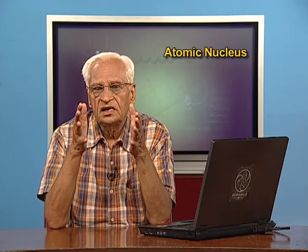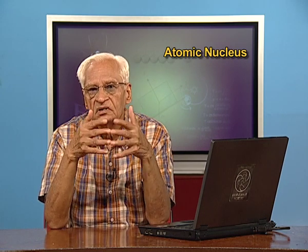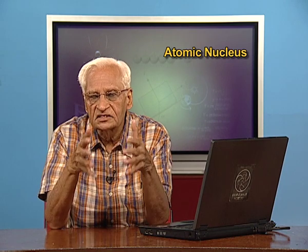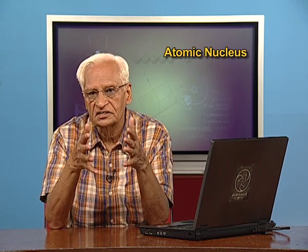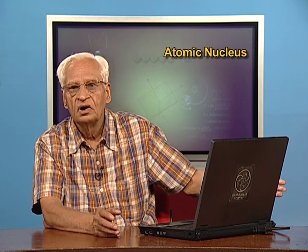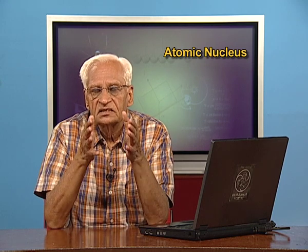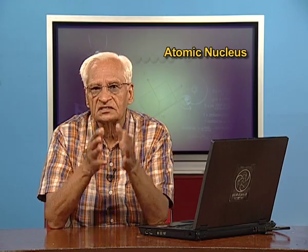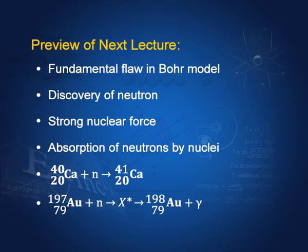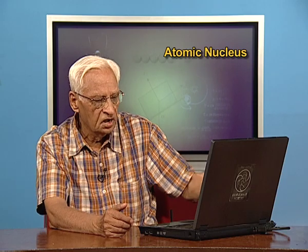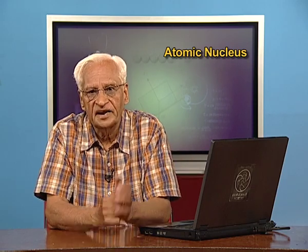So in this lecture, we studied the developments leading up to the discovery of the nucleus and we were discussing the structure of the nucleus when we interrupted this story to understand the uncertainty principle, which makes it impossible for electrons to exist inside the nucleus. In the next lecture, we shall see what the uncertainty principle does to the Bohr model, and then resume our story of the structure of the nucleus. We shall study the discovery of the neutron, strong nuclear force, absorption of neutrons by nuclei, and finally learn about fission by neutron capture.